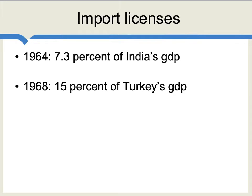Kruger made the point that if these import licenses are so valuable, in accord with the concept of rent-seeking behavior, people will devote a lot of resources to trying to get the import license. You get an import license in these contexts by lobbying the government, by being politically connected, by getting favors from your friends. So just think about it — if import licenses are worth up to 15% of Turkey's GDP, how much money, resources, time, and effort will people invest trying to get those import licenses? Kruger said we don't exactly know the number, but you can imagine that in some circumstances people would be willing to invest up to 15% of Turkey's GDP.